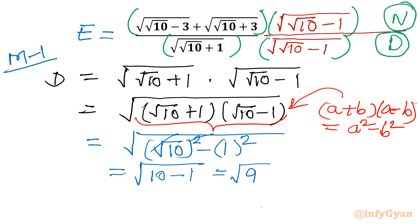We know that 9 is 3 squared, so square root of 3 squared — the square and square root cancel — giving 3 as our denominator value. So the denominator is resolved.